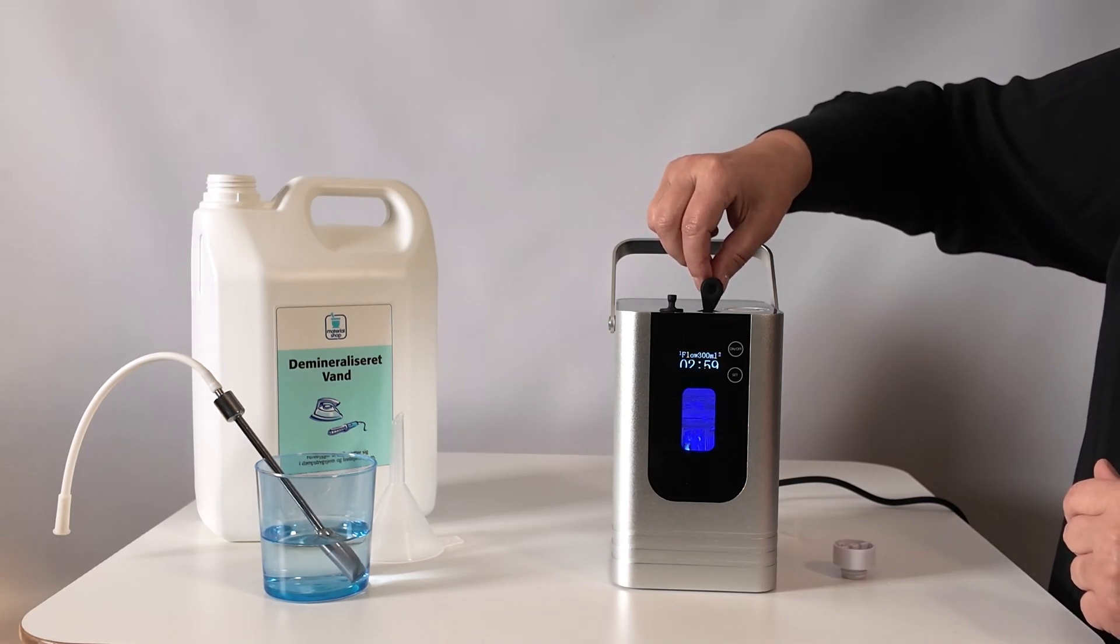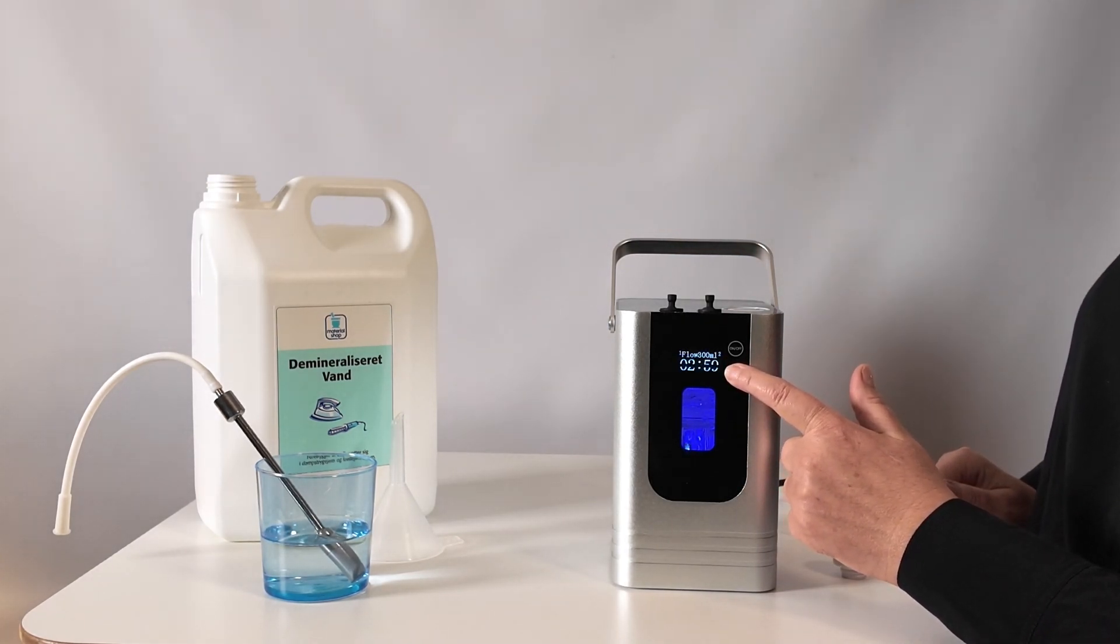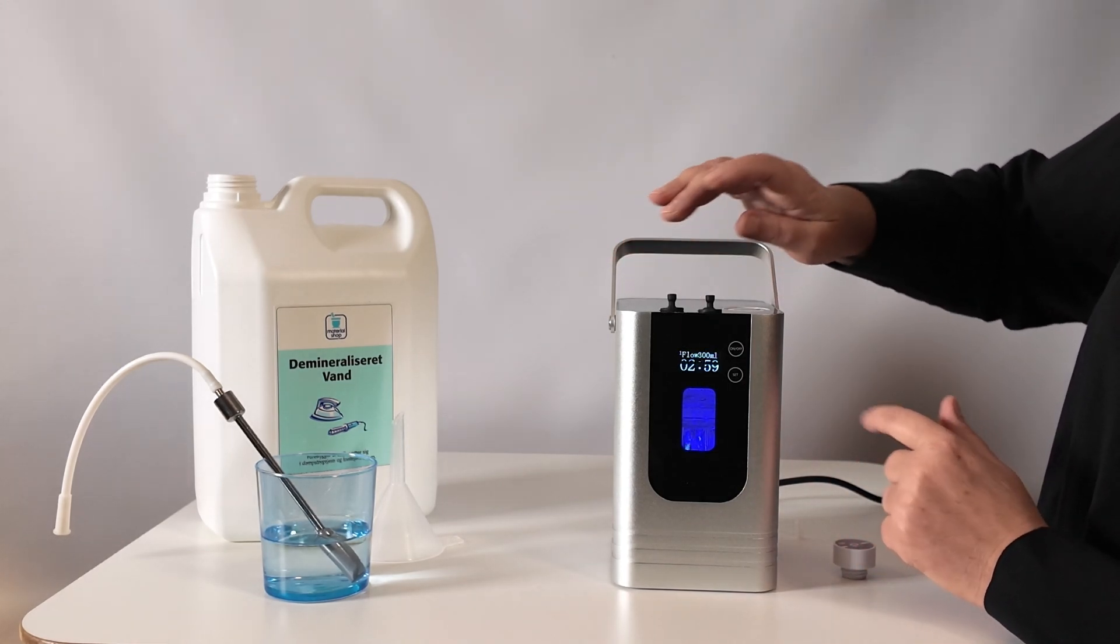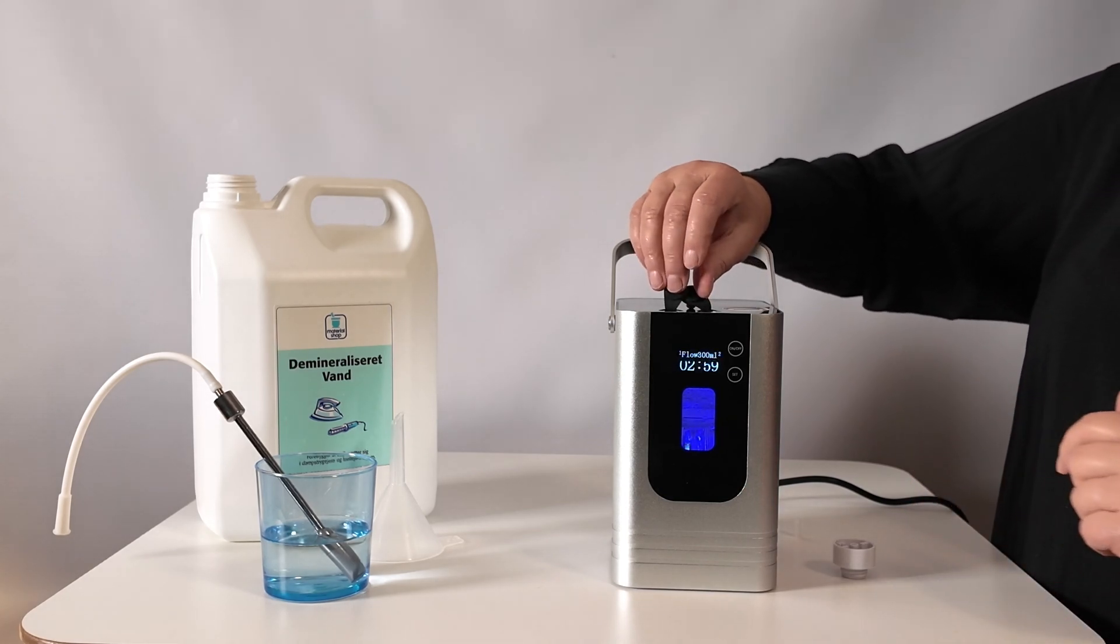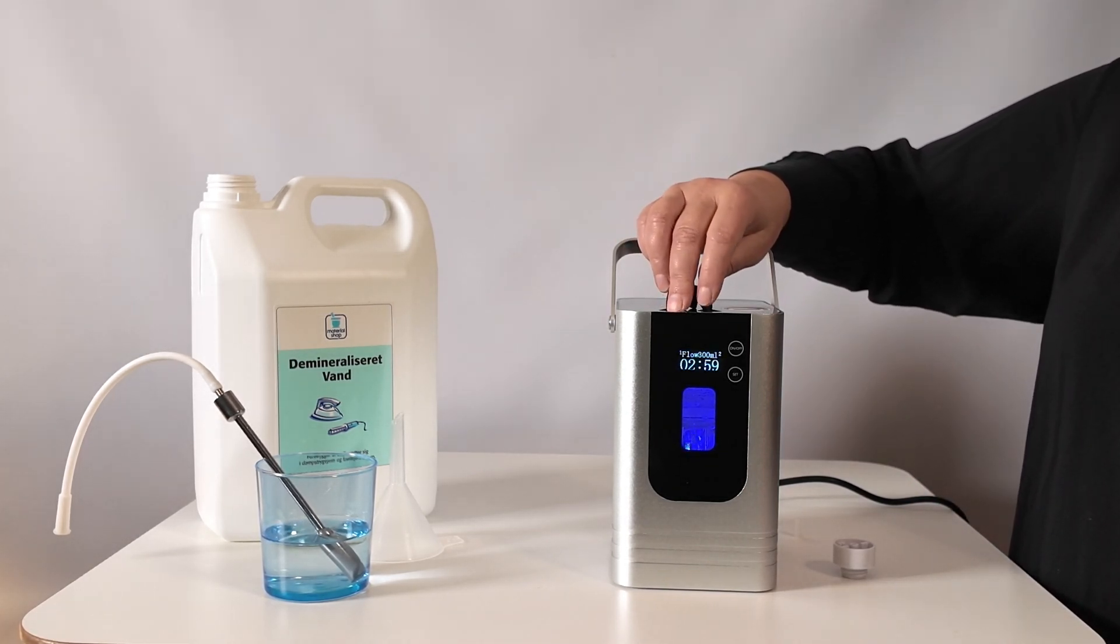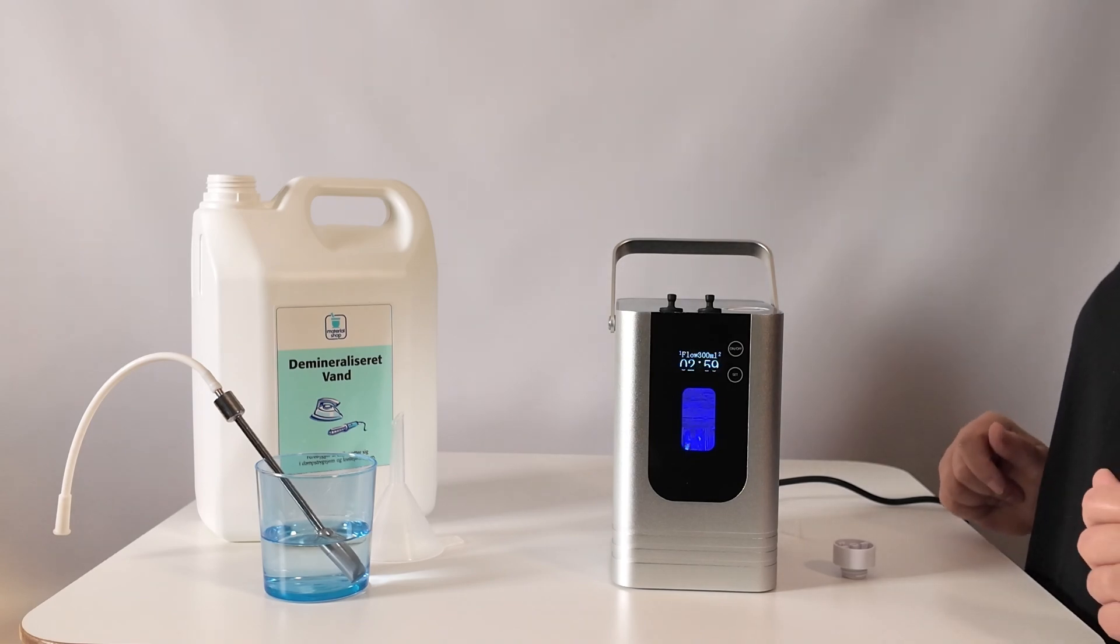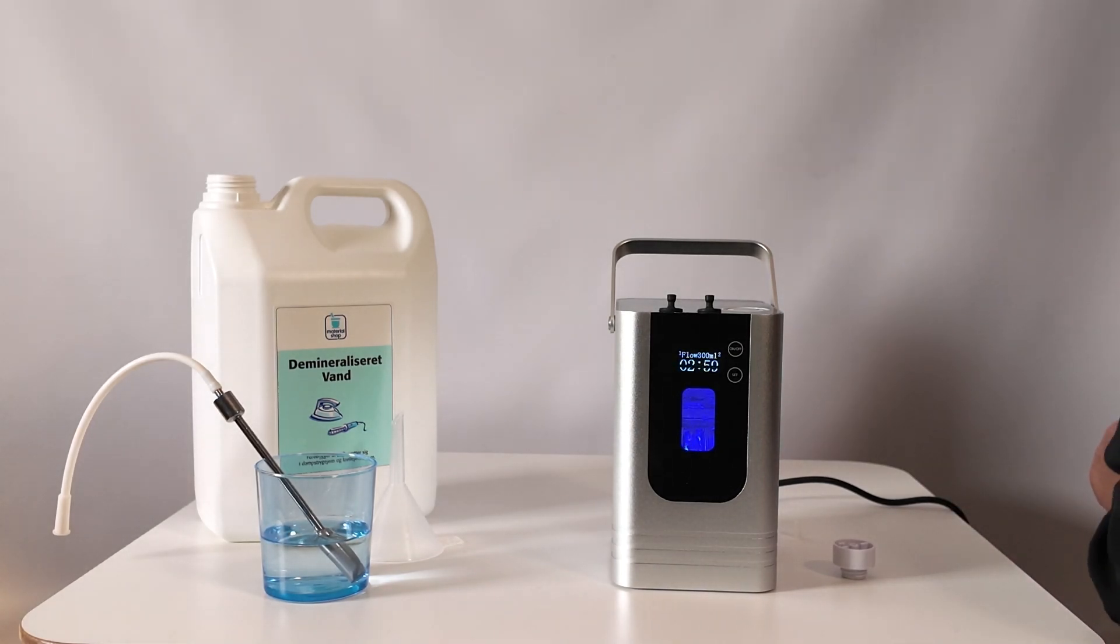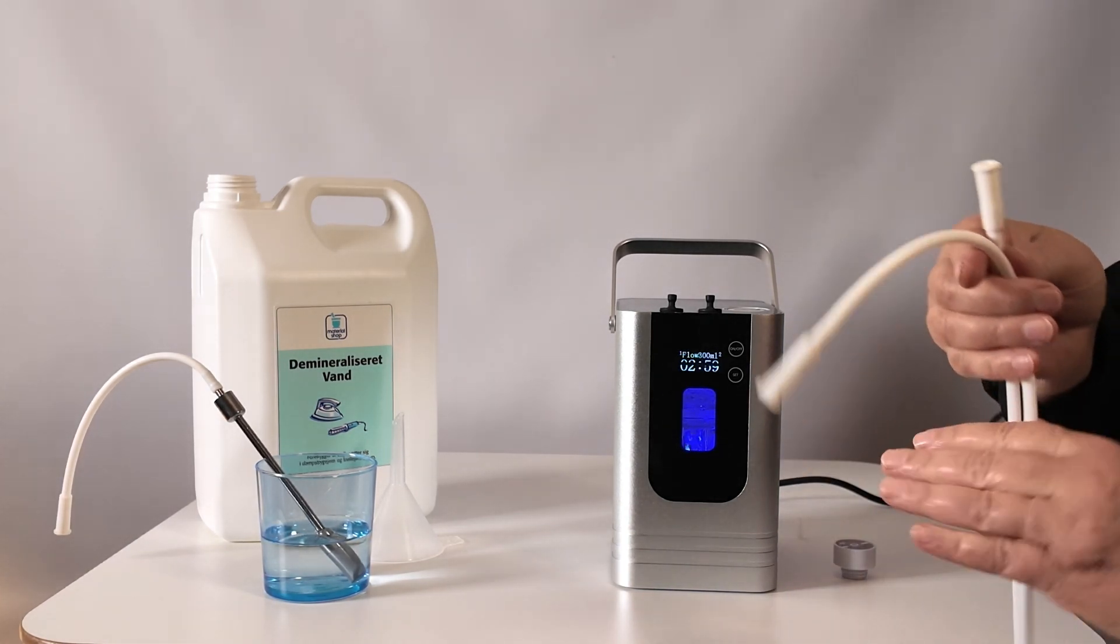On the top you have outlet 1 and outlet 2, and as you can see you can shift. What you have to be aware of is that in outlet 1 you can have all 300, or you can have just 200, and then 100 will get out of outlet 2.